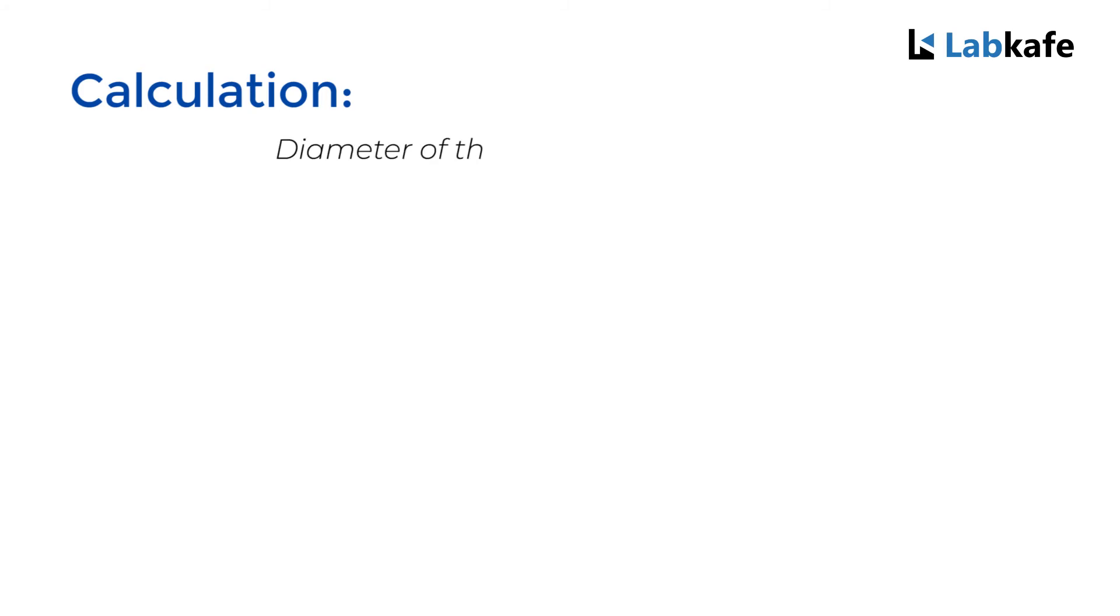Calculation: The diameter of the sphere Ds equals 2.493 cm. Hence, the radius of the sphere rs equals Ds/2 equals 1.2465 cm.